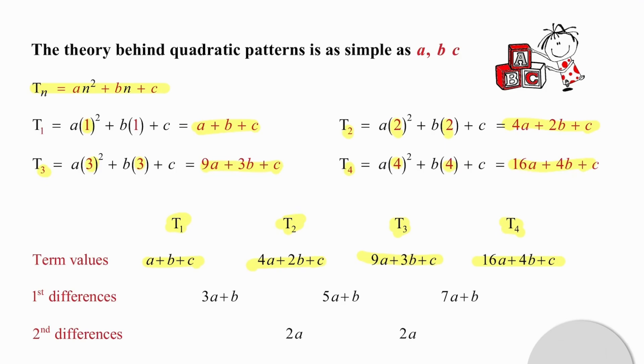Now, if we take the difference between the first two terms, we get the first of the first difference row, 3a plus b. If we take the difference between the second and third terms, we get the second first difference. And if we take the next difference between the third and fourth terms, we get the third difference in the first differences row. Those differences form a linear pattern, which is going to be very important in many of the questions that we tackle going forward.